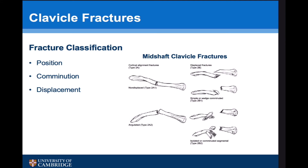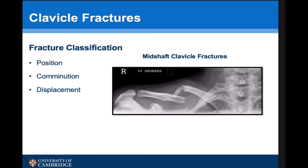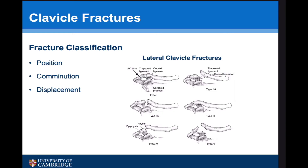For mid-shaft clavicle fractures there are a number of classification systems. This is the Robinson classification system, and importantly, as the number gets higher the comminution gets higher. A telltale sign that a fracture is likely to go on to non-union is the presence of a vertical segmental comminuted fragment. In such a fracture, that vertical fragment means there's a high chance that if you don't fix it, the fracture simply will not unite — so ultimately you will have to intervene at some point.